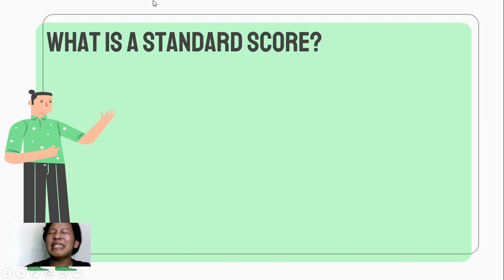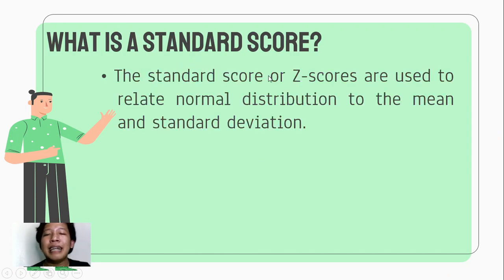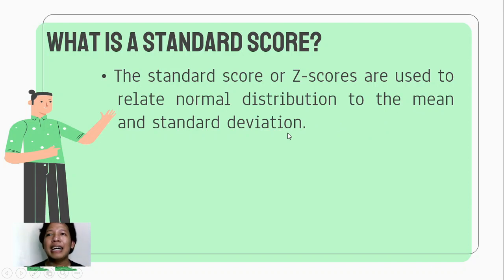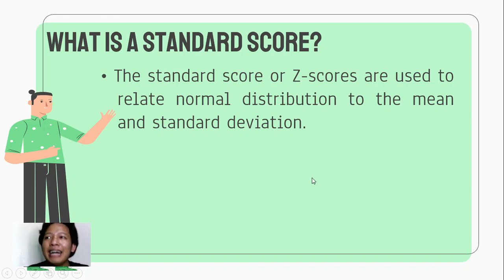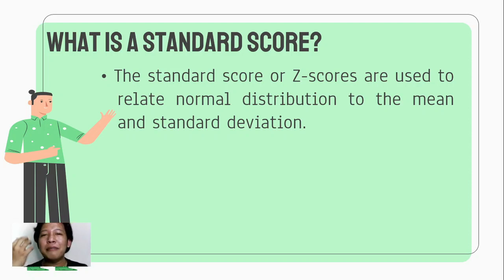What is a standard score? A standard score or z-score is used to relate the normal distribution to the mean and standard deviation. We are standardizing it — making the mean zero and the standard deviation one — so that we can use the table, because we cannot use the table unless we have standardized our score.